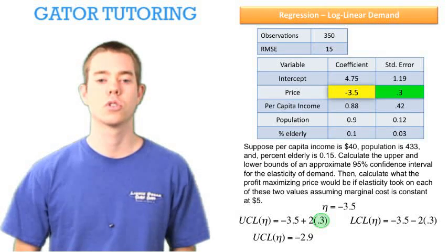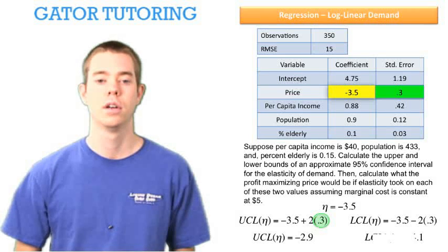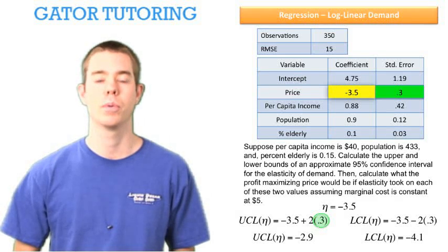Likewise, we can do the lower control limit, now subtracting 2 times the standard error, and we find the lower control limit is equal to negative 4.1.